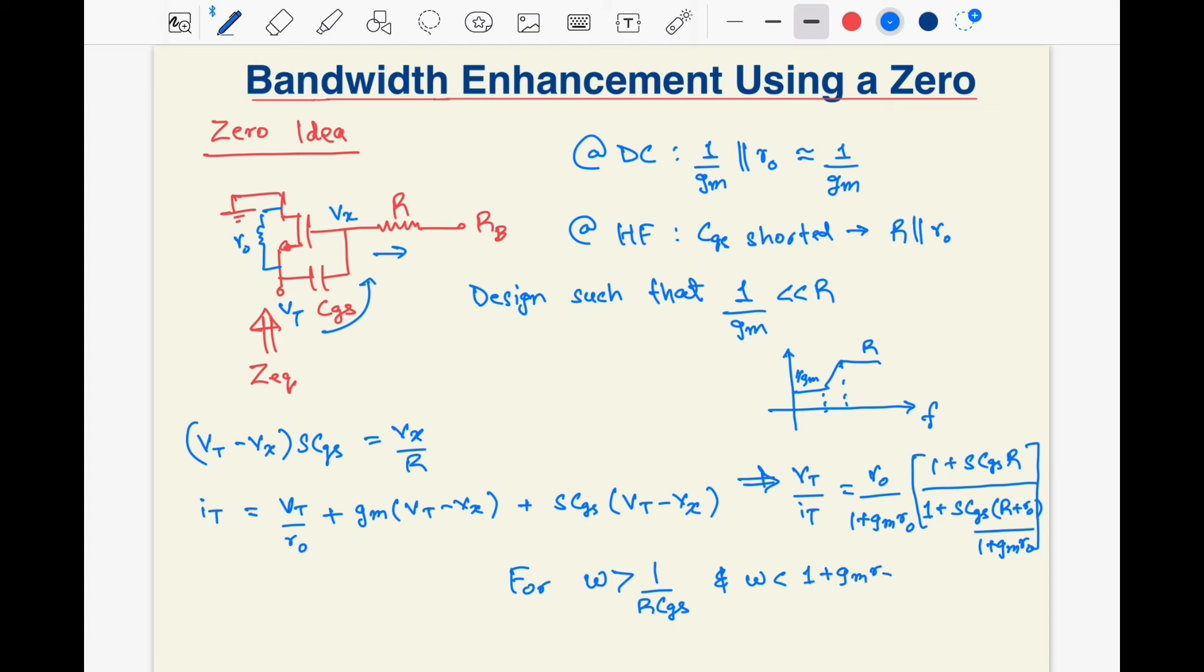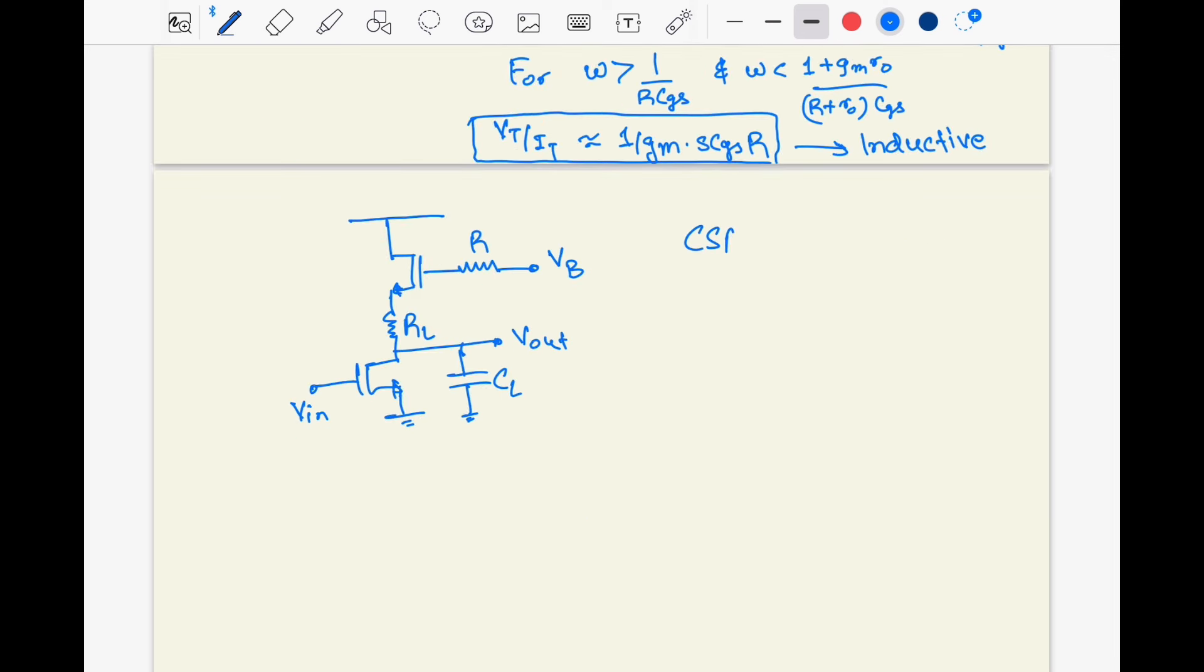In summary, we can use this block to increase the impedance with frequency to compensate for the 20 dB per decade roll-off in gain attributed to the output pole due to CL.